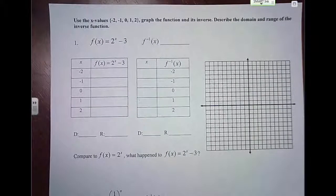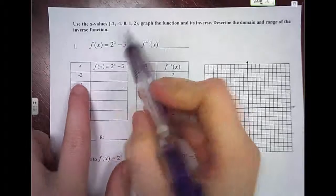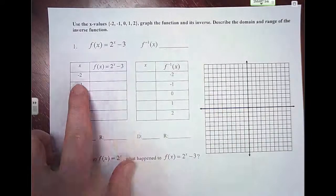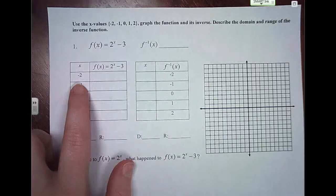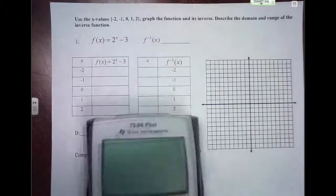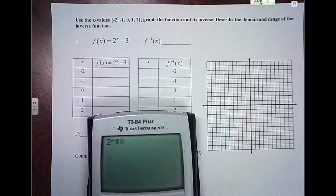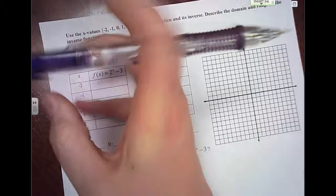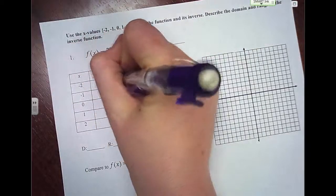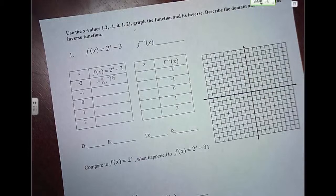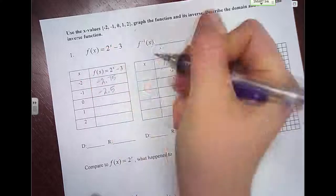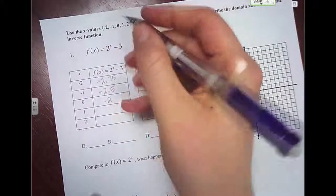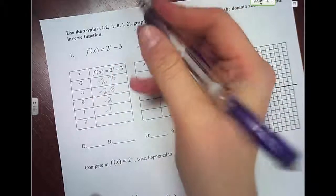Now let's graph these next two examples together. We'll use x values negative 2, negative 1, 0, 1, and 2. Plugging into 2 to the x minus 3: for x = negative 2, we get negative 2.75. For x = negative 1, we get negative 2.5. For x = 0, we get negative 2. For x = 1, we get negative 1. And for x = 2, we get 1. You can also use your calculator: go to y equals, put in the equation 2 to the x minus 3, then second graph to see the table of values.